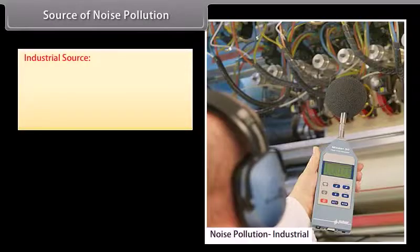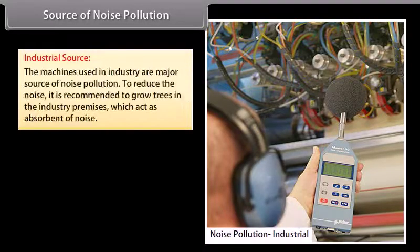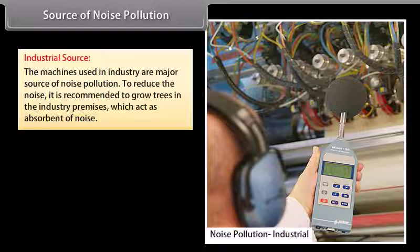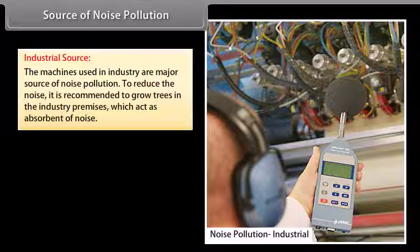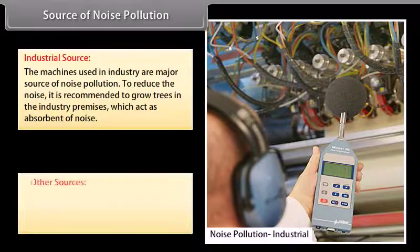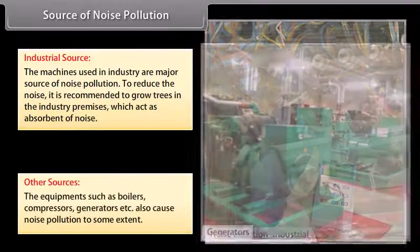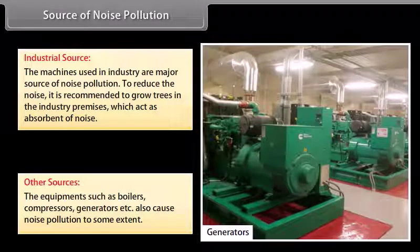Industrial sources: the machines used in industry are a major source of noise pollution. To reduce noise, it is recommended to grow trees in industry premises, which act as absorbents of noise. Other sources such as boilers, compressors, generators, etc. also cause noise pollution to some extent.